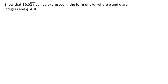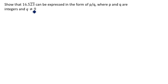Hi friends, welcome to my channel 'Excellent Ideas in Education.' Today we are going to solve this problem: show that 16.523 — where 2 and 3 have a bar given, meaning two digits are repeating — can be expressed in the form p by q, where p and q are integers and q is not equal to 0.